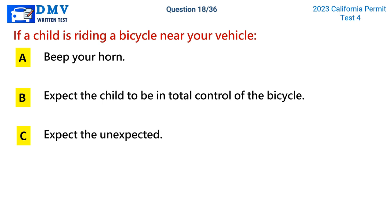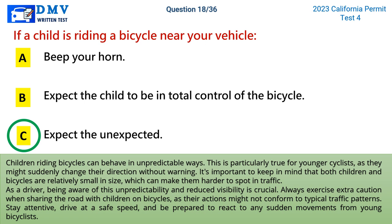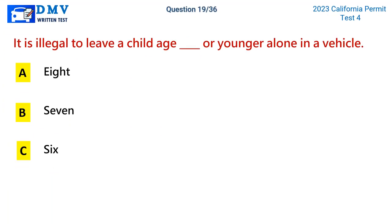Question 18: If a child is riding a bicycle near your vehicle. A) beep your horn, B) expect the child to be in total control of the bicycle, C) expect the unexpected. The correct answer is C. Children riding bicycles can behave in unpredictable ways, particularly younger cyclists who might suddenly change direction without warning. Both children and bicycles are relatively small, making them harder to spot in traffic. Always exercise extra caution when sharing the road with children on bicycles and be prepared to react to any sudden movements.